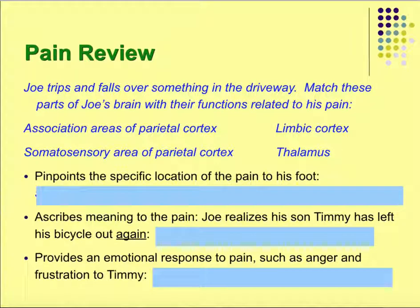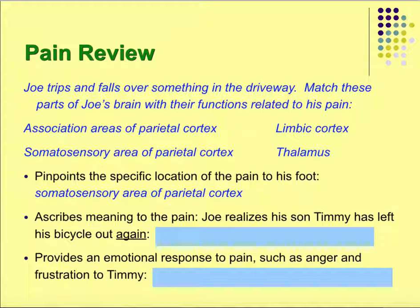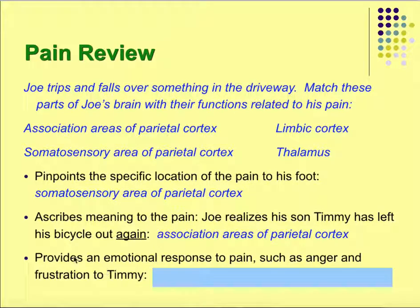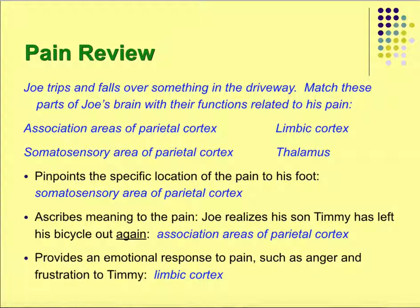Joe trips and falls over something in the driveway. The primary somatosensory cortex pinpoints the specific location of the pain to his foot. The association cortex ascribes meaning to the pain — for example, Joe realizes his son Timmy left his bicycle out again. The limbic system provides the emotional response, such as anger and frustration at little Timmy.